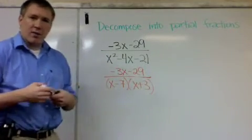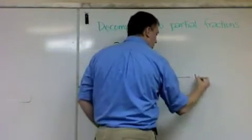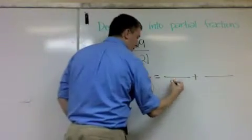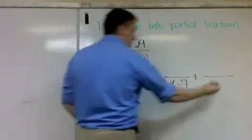And then now, this is going to equal, my whole goal is to make two fractions. On the bottom of one of those fractions, I'm going to have x minus 7, one of my factors. And on the other one, I'm going to have x plus 3, my other factor.